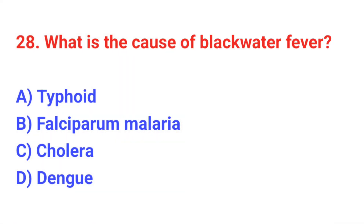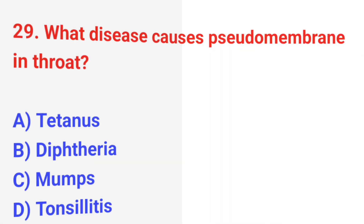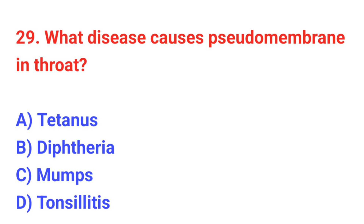Question number 28: What is the cause of blackwater fever? The correct answer is B: Haemolysis from malaria. Question number 29: What disease causes pseudomembrane in the throat? The correct answer is B: Diphtheria.